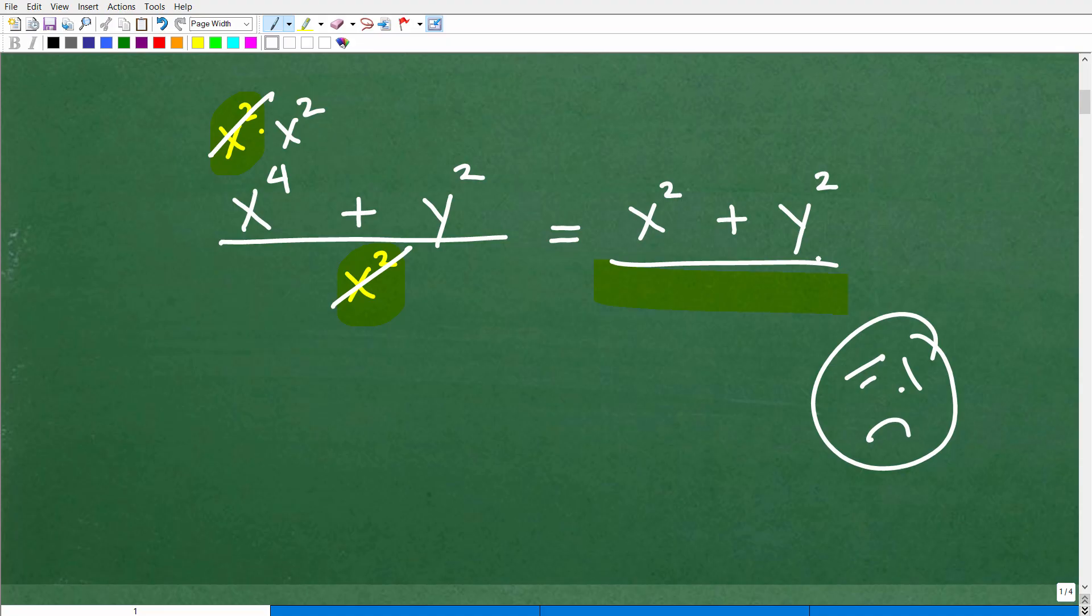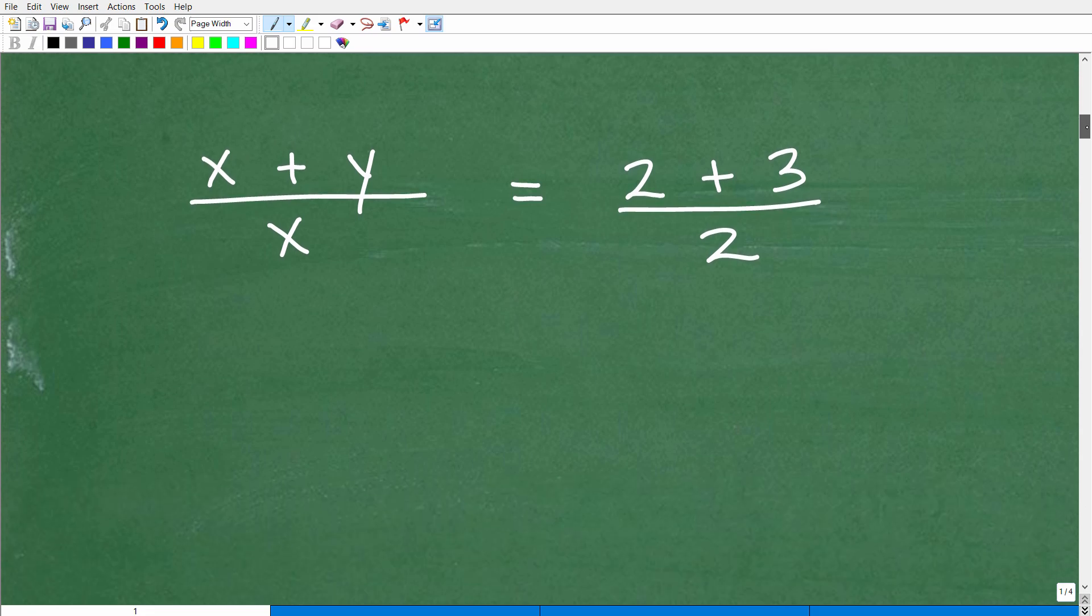But if you were tempted to kind of say, oh, I have x squared, x to the fourth. If this made sense to you and your brain said, hey, this looks pretty good. Let's go ahead and do this. Well, again, this is a very, very common error. But let's go ahead and take a look at this error with some other problems. Okay. And then we'll kind of talk about why this is not correct.